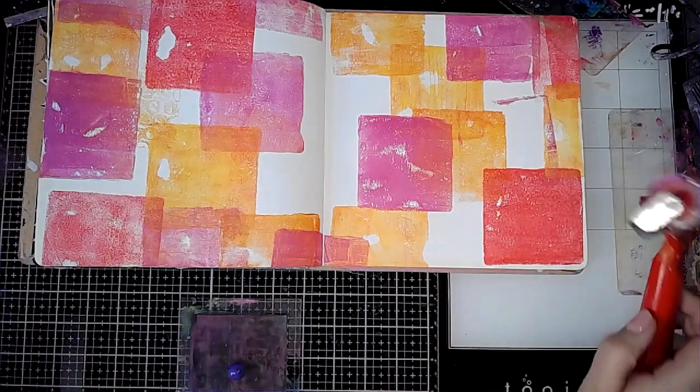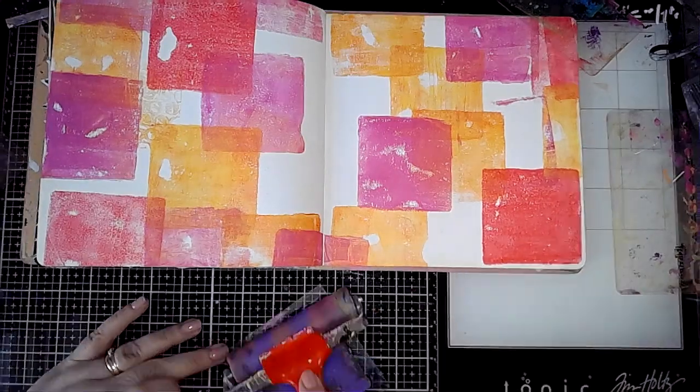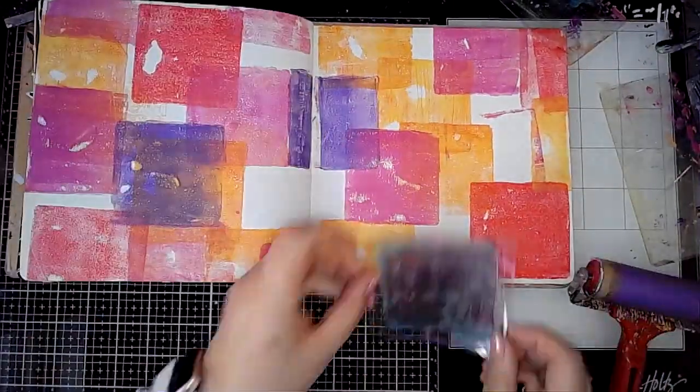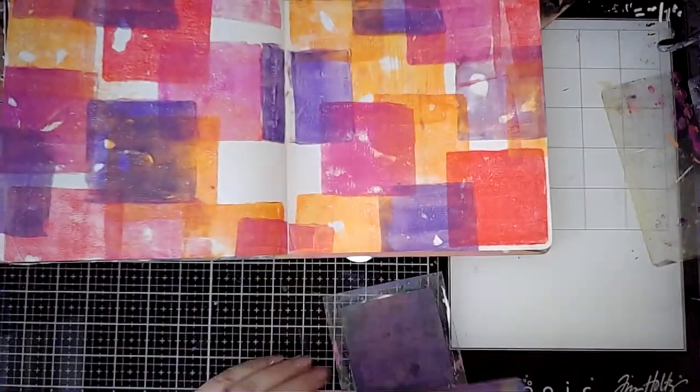As you know that's one of my favorite colors and then this is Amsterdam Acrylic paint as well in Ultramarine Violet and it's really pretty purple. I like that one.